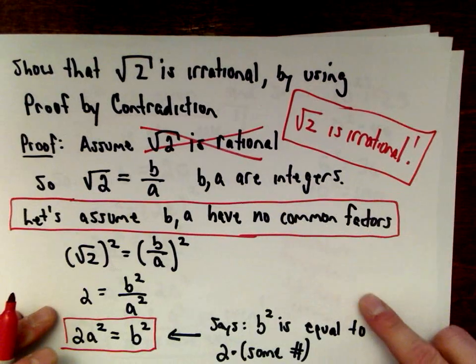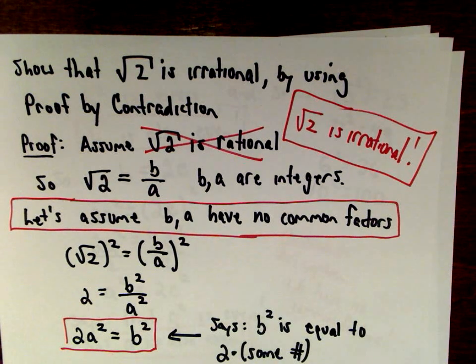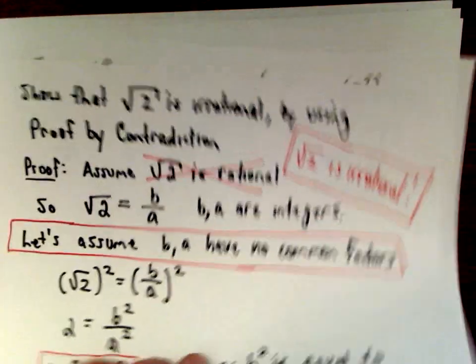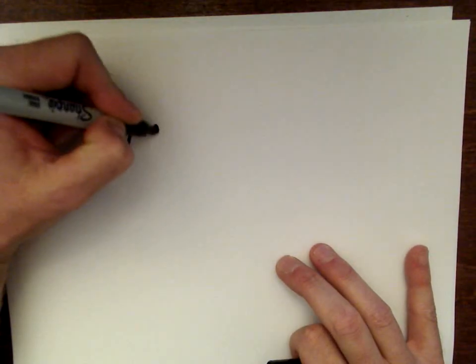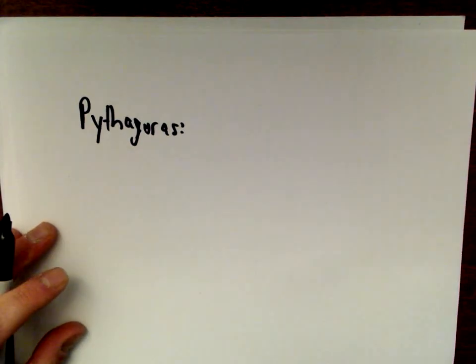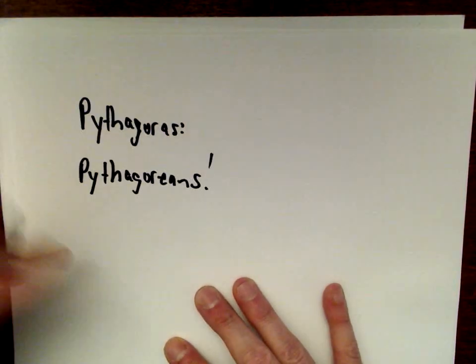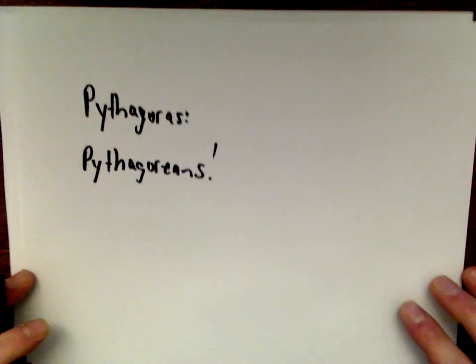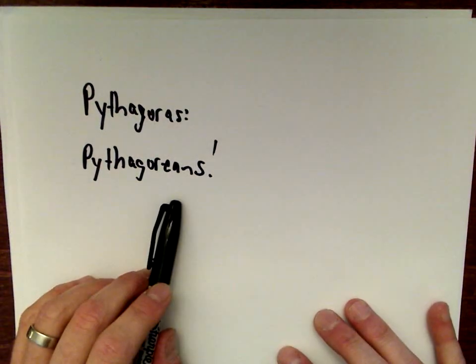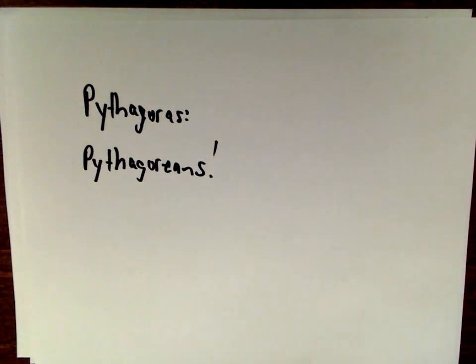Proof complete — we've shown that the square root of 2 is irrational. Now, what does that have to do with murder? You may have heard of Pythagoras and the Pythagorean theorem. There was actually a group in Greece known as the Pythagoreans, and they were of the belief that everything had to do with numbers. They held numbers in an almost mystic, religious sense.